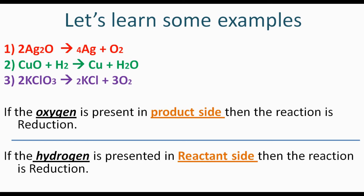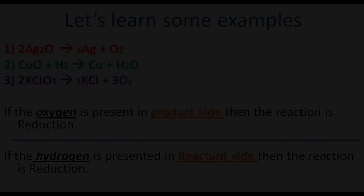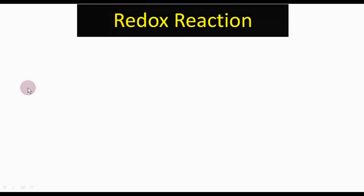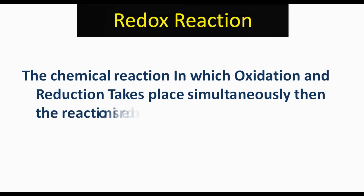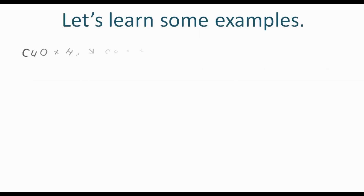Now let's learn redox reaction. The chemical reaction in which oxidation and reduction take place simultaneously is called a redox reaction. Let's take an example: CuO + H2 → Cu + H2O. Here Cu loses oxygen (reduction) and H2 accepts oxygen (oxidation), so both happen at the same time — it is an example of a redox reaction.